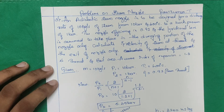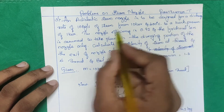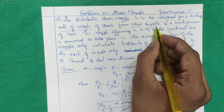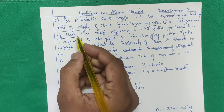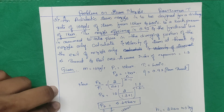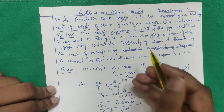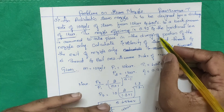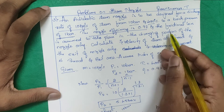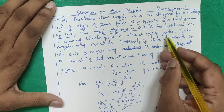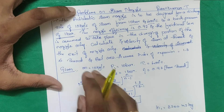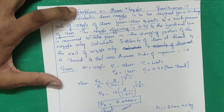Problem 3: An adiabatic steam nozzle discharges 10 kg/s at 10 bar, 400°C (superheated) to a back pressure of 1 bar. Nozzle efficiency is given, and frictional losses occur only in the discharging portion (throat to exit). Calculate the velocity of steam at the throat and exit, and the throat and exit areas.